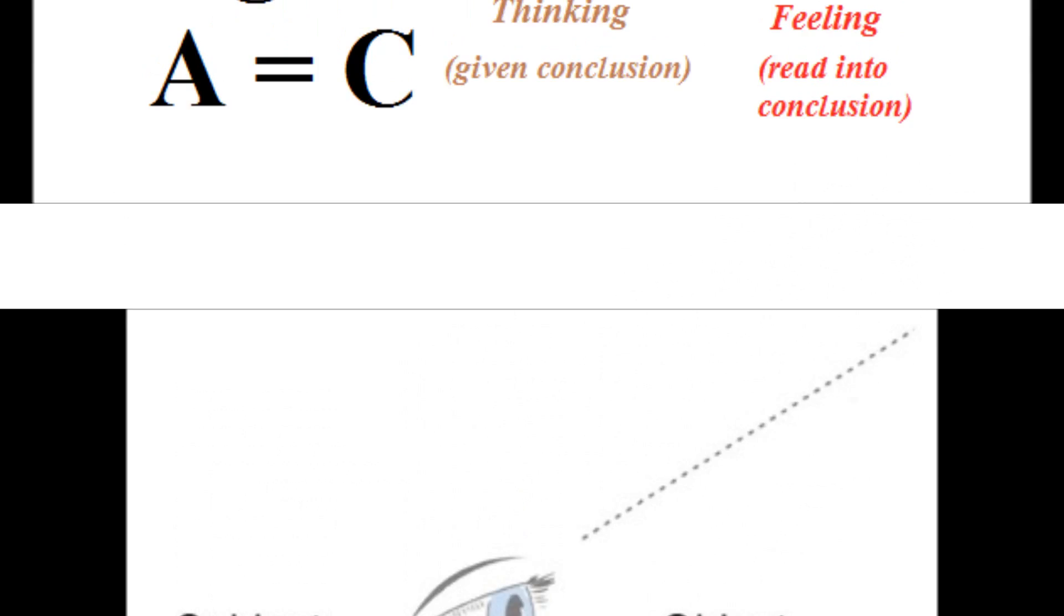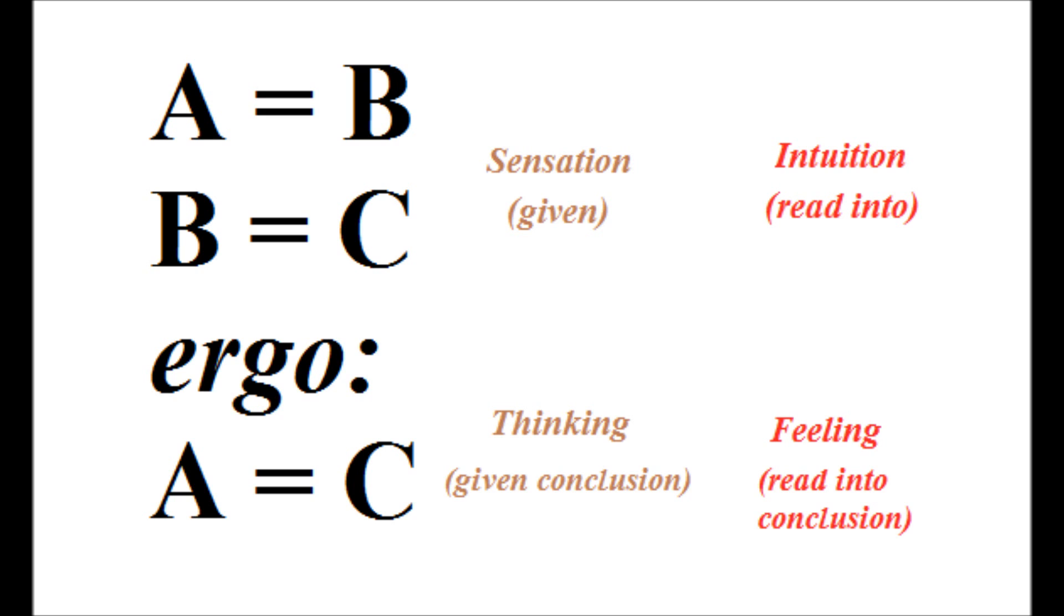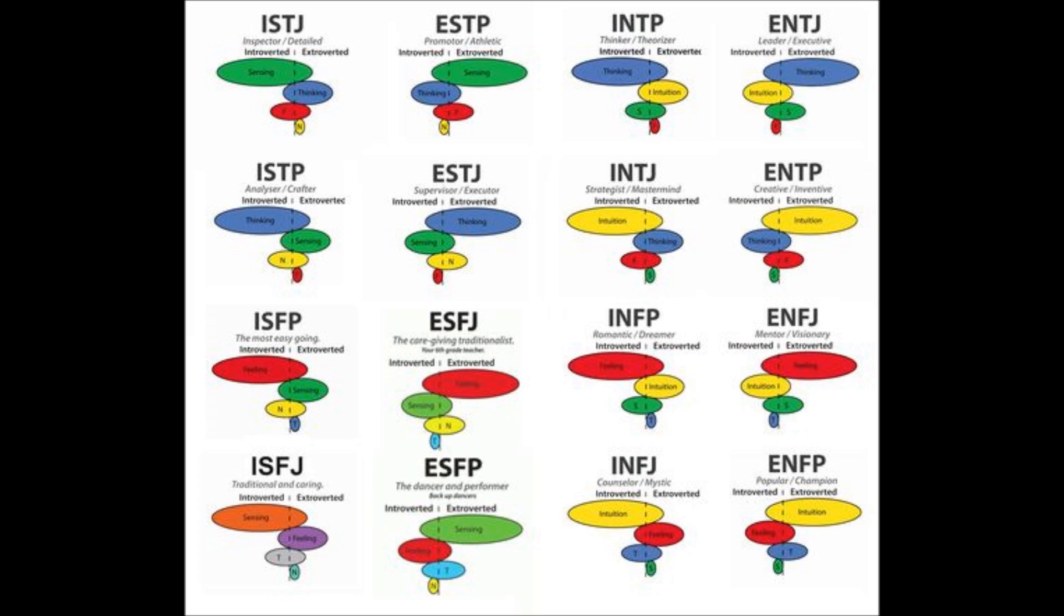Continuing on. Perception and judgment present the opposition even more clearly. Perception simply takes in the information while judgment provides an evaluation of it. They do not exist separately but must work together. Hence why each type is posited as the cooperation of both a perception and judgment axis.